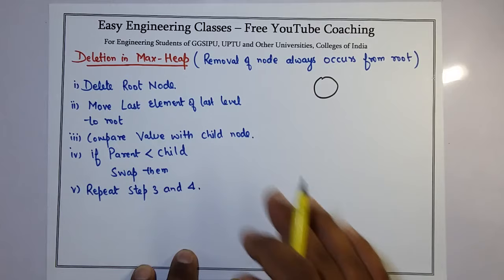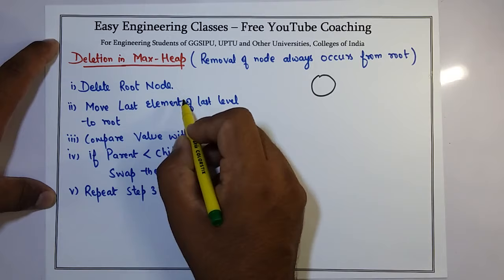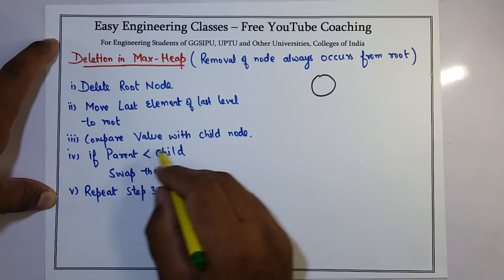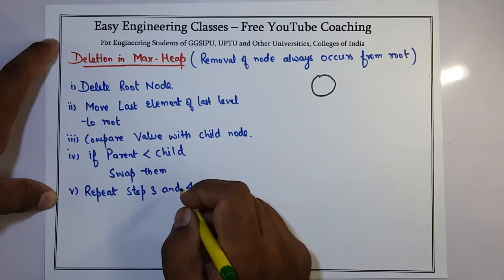This is the algorithm: Delete root node, move last element of last level to root, compare value with child node. If parent is less than child, we need to swap them.